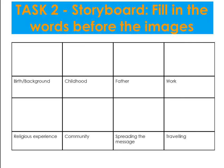For task two, if you've downloaded the PowerPoint, you should be able to put pictures in and write directly on it. Or you could create your own on a Word document, PowerPoint, or Publisher. You're filling in a storyboard — you draw or insert a picture, then write a sentence or two to sum up his birth and background, childhood, his father, his work, his religious experience, the community, spreading the message, and traveling. Under all those headings, write a couple of sentences to sum up that part of his life, then add a picture — drawn by hand or copied in on the computer.